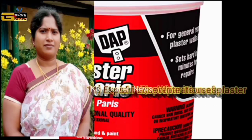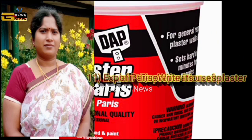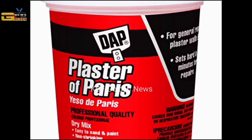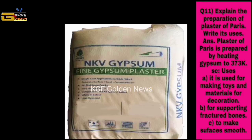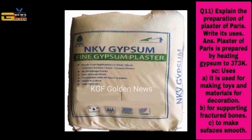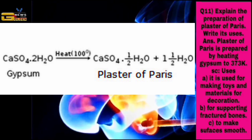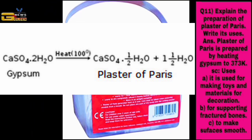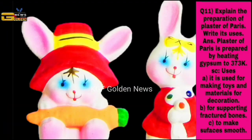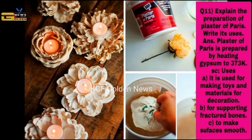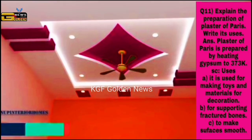Question number eleven: explain the preparation of plaster of Paris and write its uses. The answer is, plaster of Paris is prepared by heating gypsum to 373 kelvin. Gypsum on heating to 373 kelvin becomes plaster of Paris and water. Uses: a. it is used for making toys and materials for decoration; b. for supporting fractured bones; c. to make surfaces smooth.